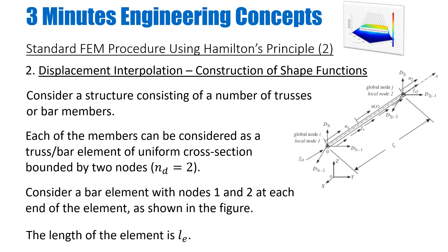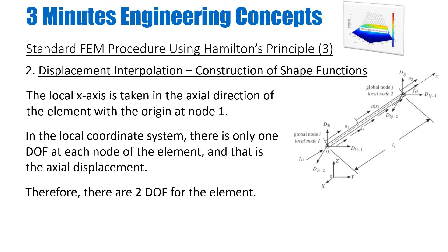Now I take one element from the previous figure. The length of the element is Le; it has two nodes — node number one and node number two — and we assume the coordinate system is such that X is along the axial direction, along the length of the bar or truss element. As per the truss element definition, depending on forces acting along the axis, in the local coordinate system we only have one displacement and that is in the X direction or axial direction of the truss member.